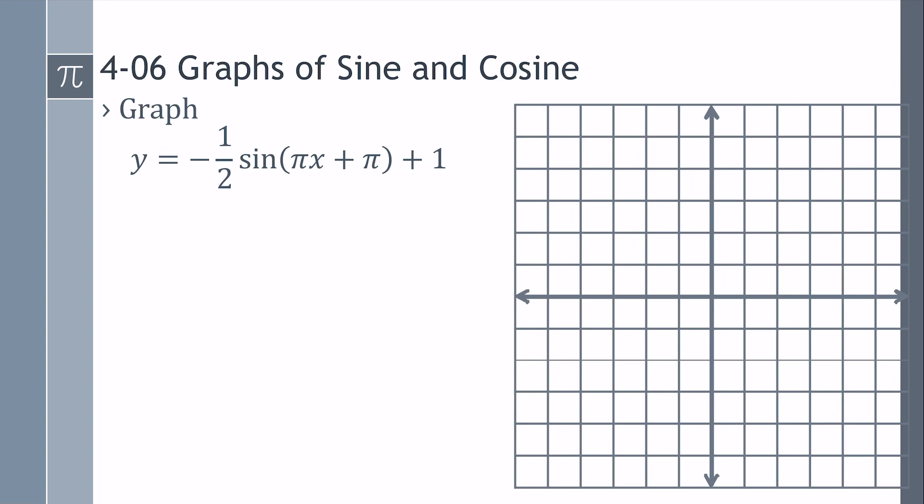All right. Let's put it all together. This time we have an A, a B, a C, and a D. So when our amplitude is negative, that means it's upside down. We have our B is pi, which means our period, which is 2 pi over B, will be 2 pi over pi, which is 2.